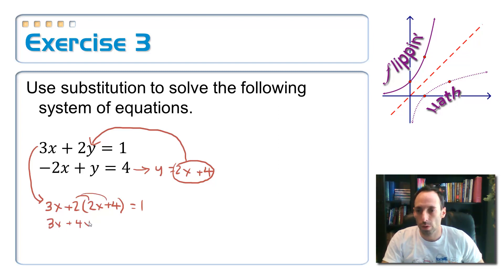3x plus 4x plus 8 equals 1. Add up my x's and I get 7 of them. Go ahead and subtract that 8 over. Let's just do that in one step. That's a negative 7. So I get an x value of negative 1.